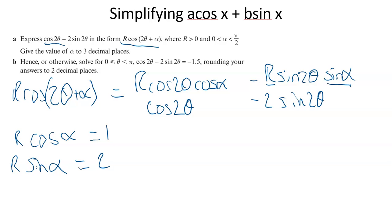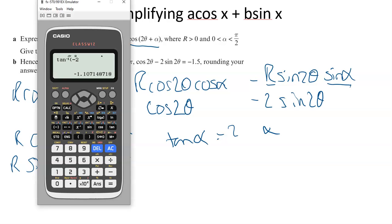To get R and α, we've got two equations, two unknowns - simultaneous equations. Do α first by dividing them, because sine over cos is tan. If we do the second one divided by the first, we get tan(α) equals 2 over 1. The Rs cancel. So tan(α) equals 2, and shift inverse tan of 2 in radians gives 1.107.